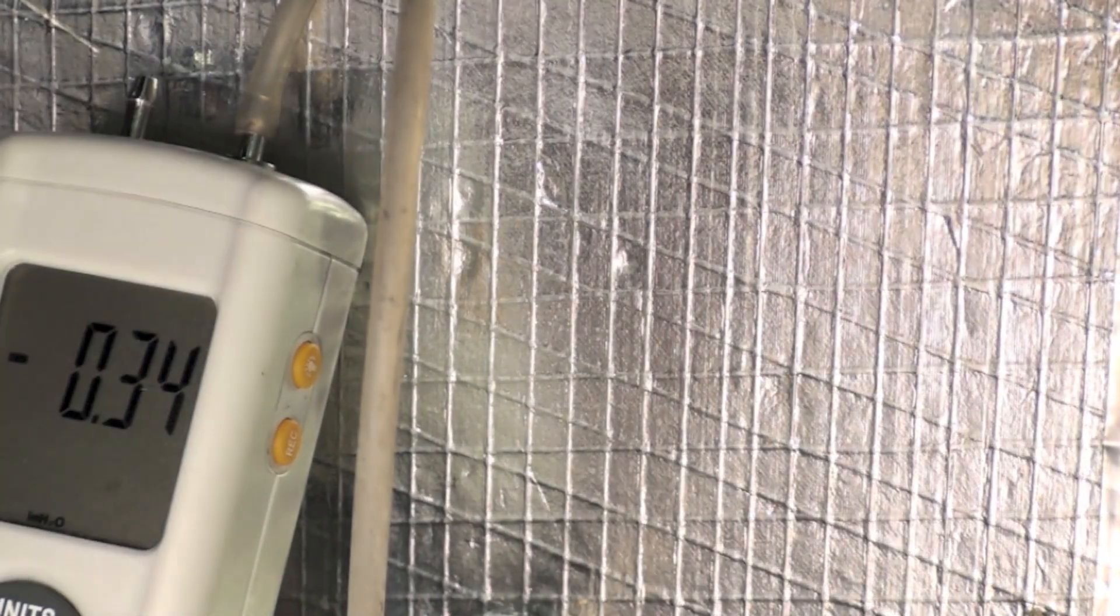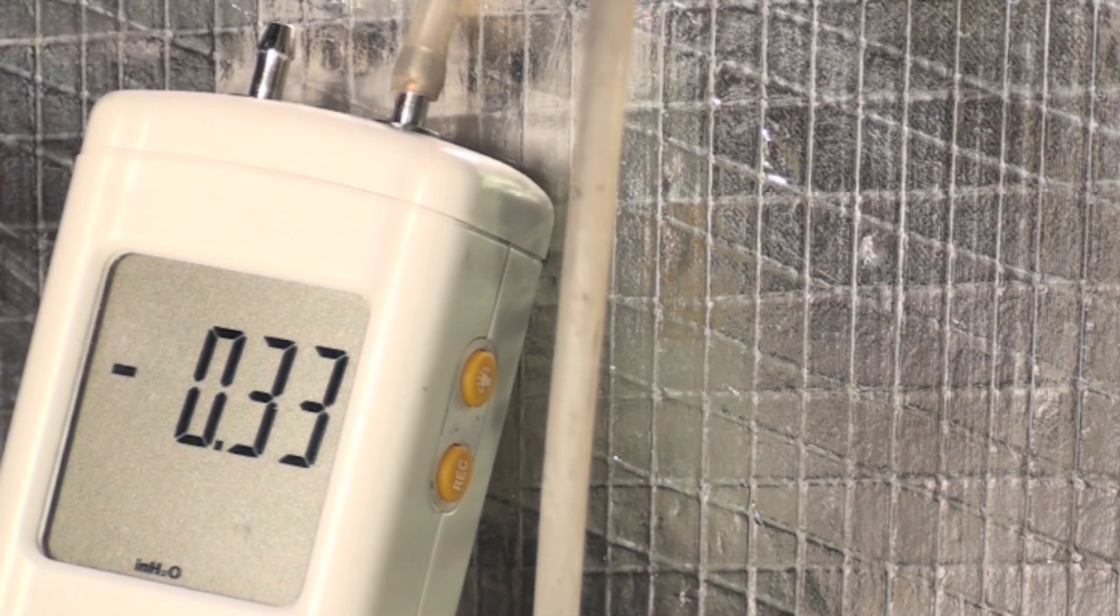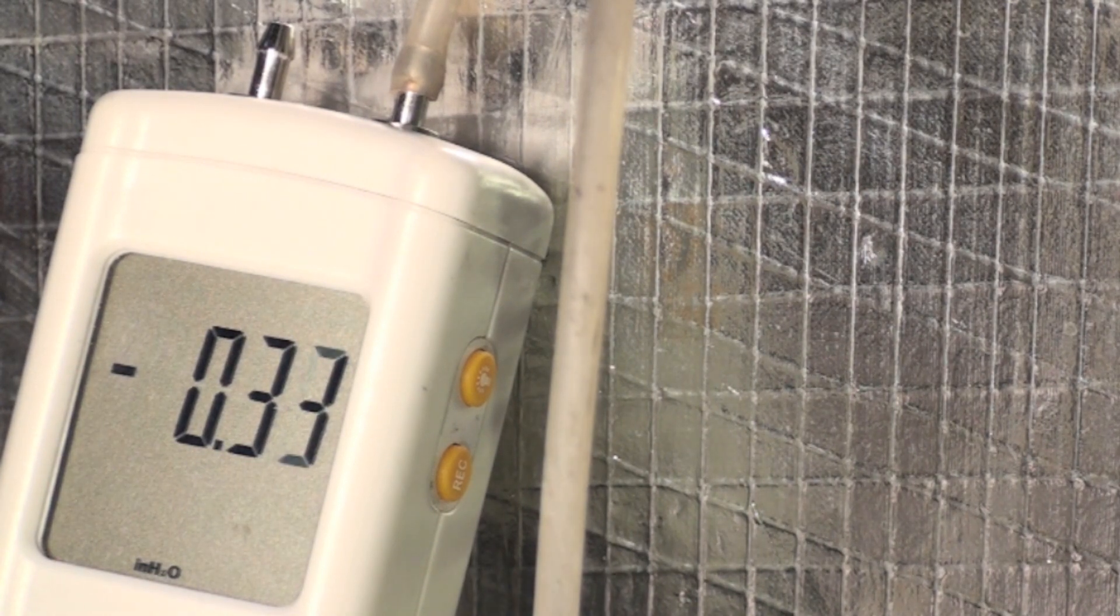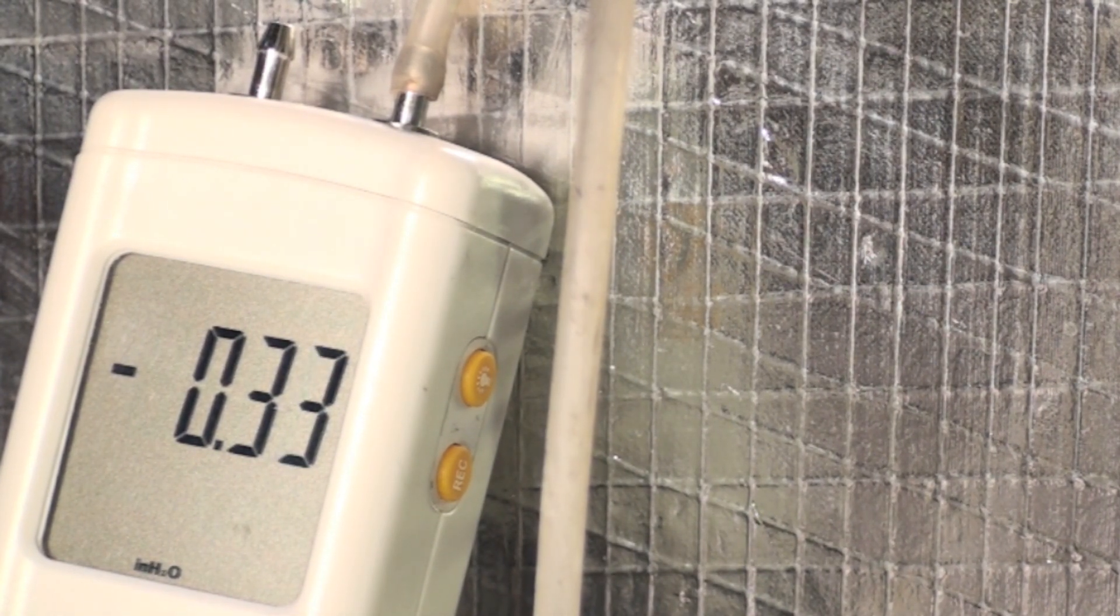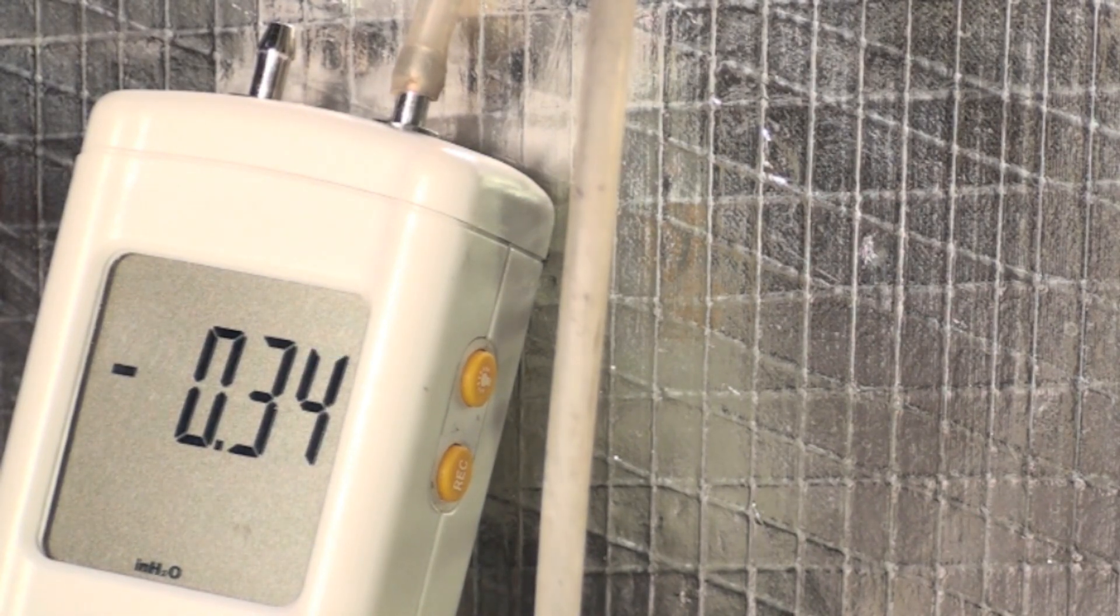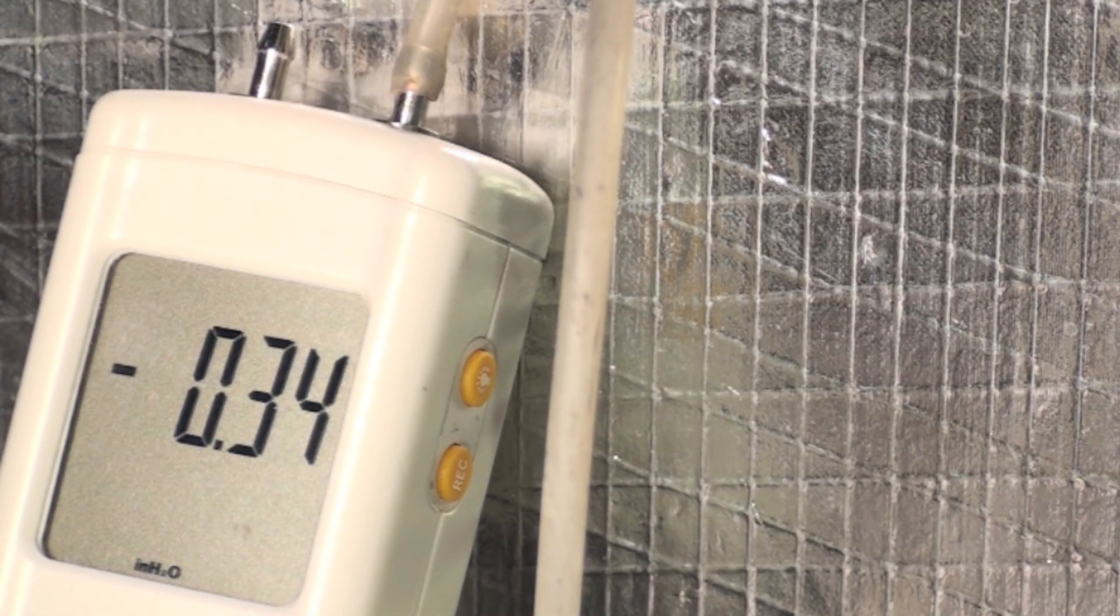I pulled that one line off and we're running about 0.34. So it looks like we've got more restriction in the return than we do across the filter. In the next one we're going to look at the positive pressures on the outlet side.